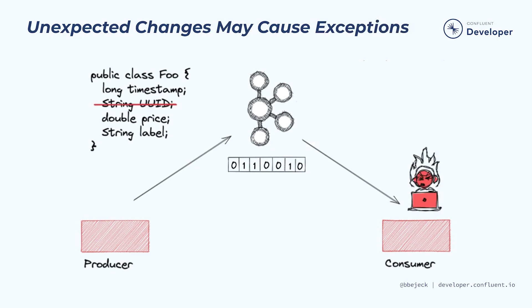The changes are made, and the producer application begins sending the updated objects into Kafka. But on the consumer side of things, the consumer receives the updated objects, expects the UUID field to be present, and, in response to its non-existence, throws an exception, forcing the application to shut down. That's obviously no good.